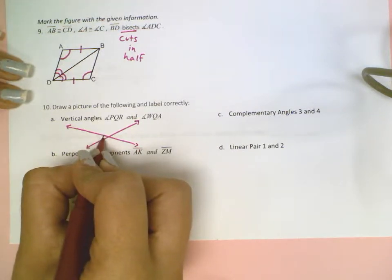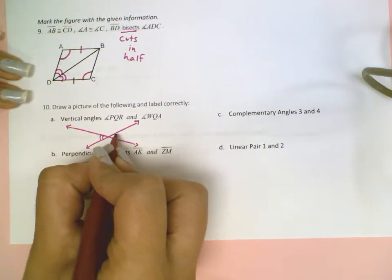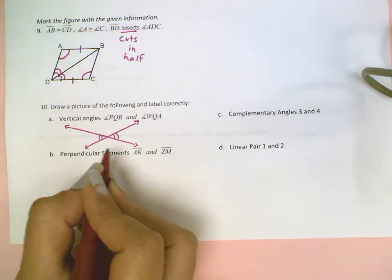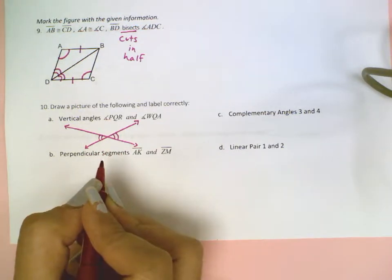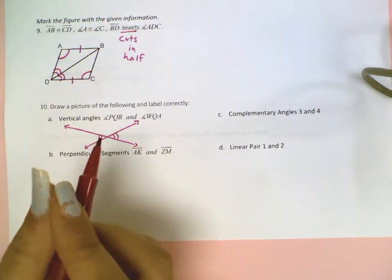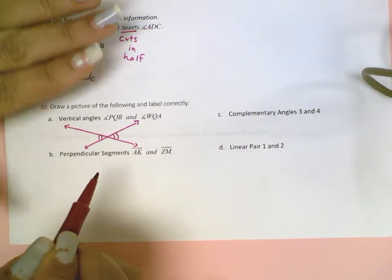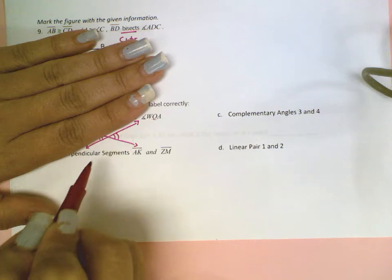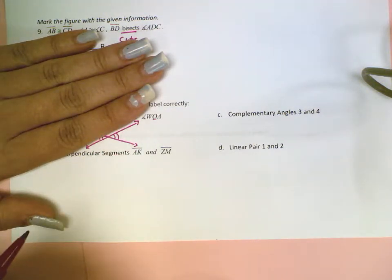If they are across from each other, those are going to symbolize the vertical angles. Vertical angles will be congruent to each other. Because if I were to tell you that this was a straight line and a straight line measures 180 degrees...